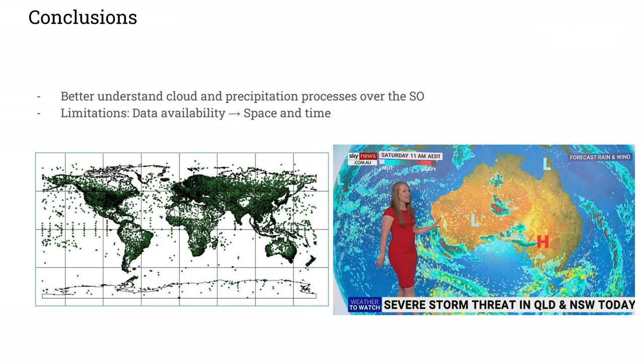With my research we were able to better understand cloud and precipitation processes over the Southern Ocean, but there is a catch: data availability. We rely mostly on ship-based measurements, which are only representative along the track where they are measuring. As shown here, weather stations worldwide are mostly concentrated in the northern hemisphere, with the southern hemisphere and ocean areas almost empty. We need more measurements covering other seasons, since the available ship campaigns were mostly concentrated in summer.